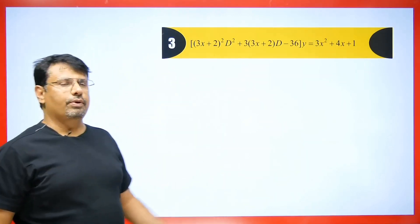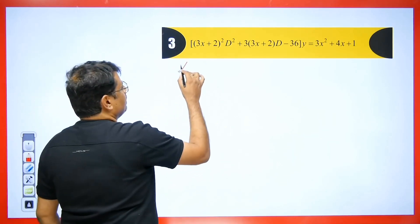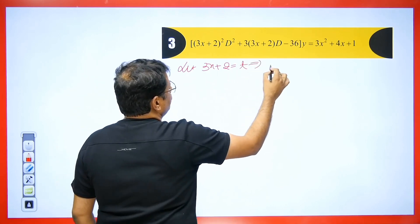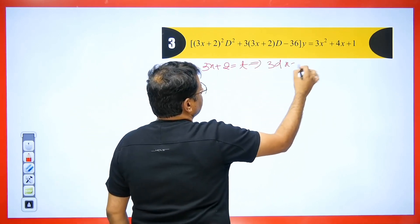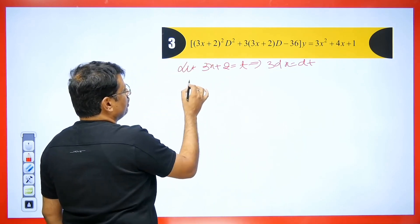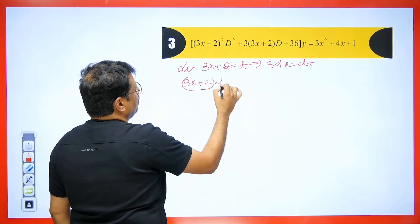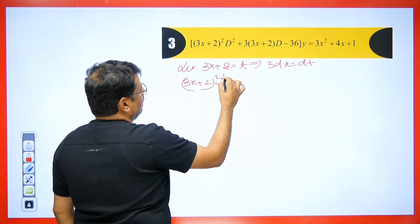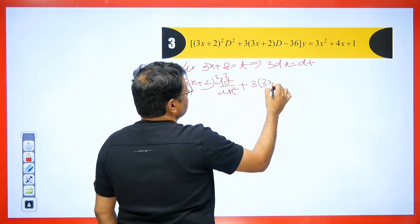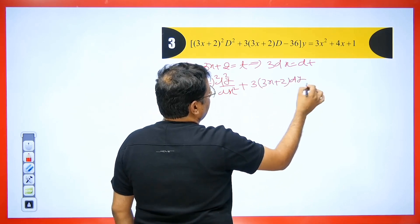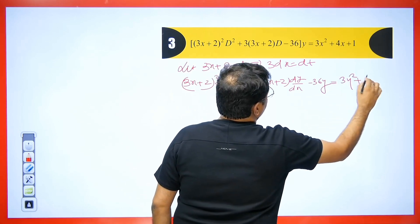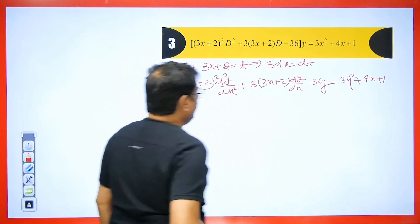Now the next question — it's a good one. You can see 3x + 2 is repeating, so we take 3x + 2 = t. If we take this as t, then 3 dx = dt. Now writing the differential equation: d²y/dx² + 3(3x+2) dy/dx − 36y = 3x² + 4x + 1.